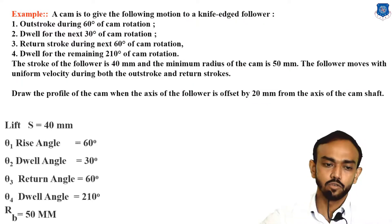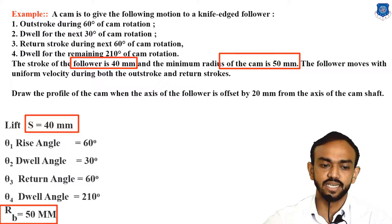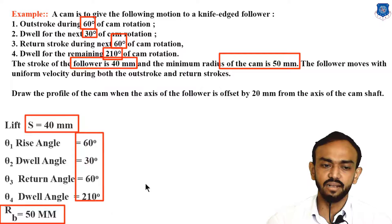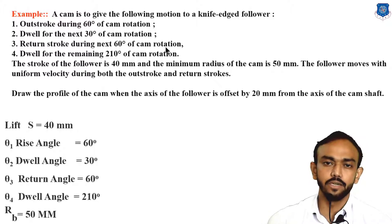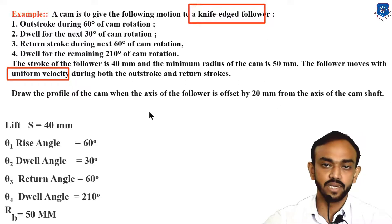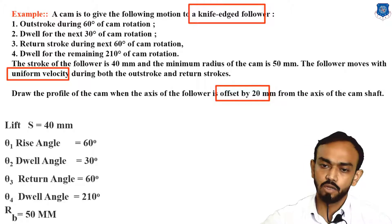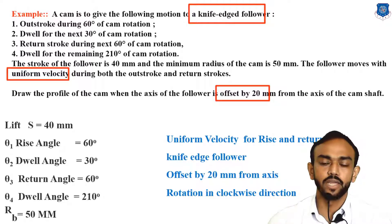Let's start by writing down the given data. Stroke or lift is 40 mm, minimum base radius is 50 mm, and all angles are 60, 30, 60, and 210 degrees — considered as angles theta 1, 2, 3, and 4 respectively. Additionally, the key points from the given data are: knife-edge follower, uniform velocity type of displacement diagram, offset is given, and we assume the direction of cam is clockwise.